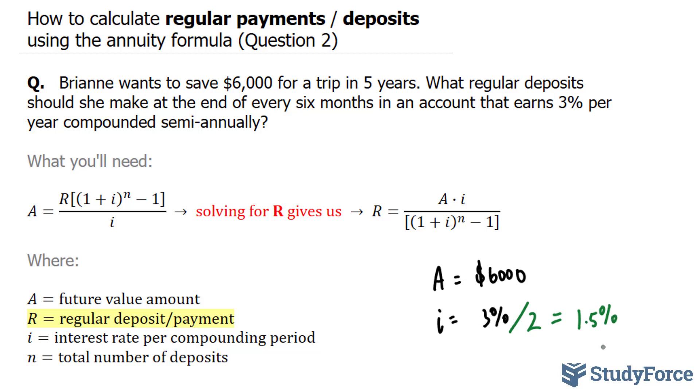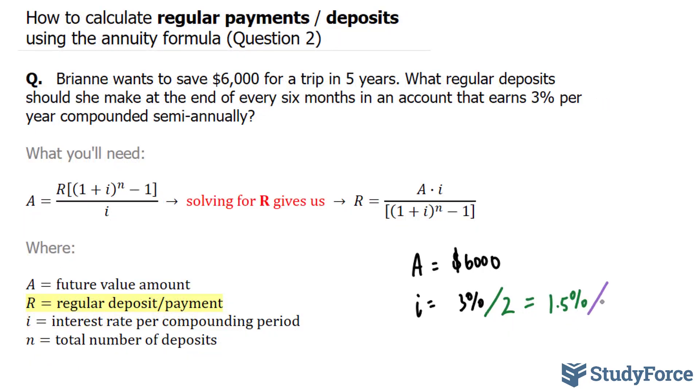When it comes to these types of questions, we do not use percentage. Instead, we use the decimal version of that percent. So to convert this from a percentage to decimal, we'll divide it by 100. This gives us 0.015.